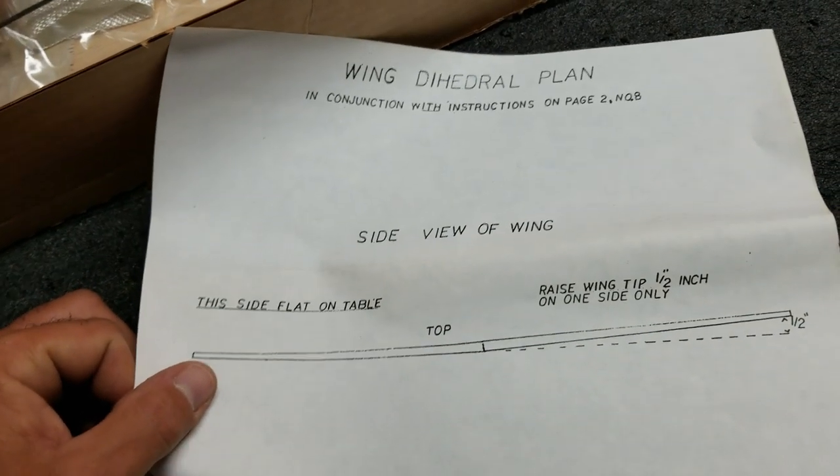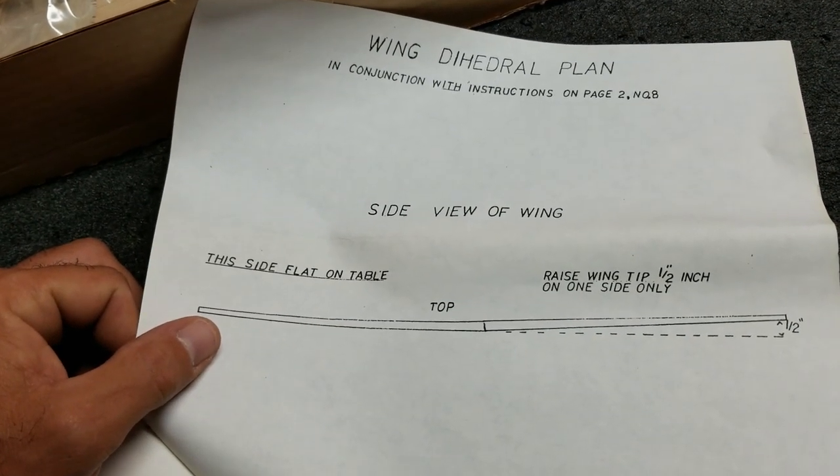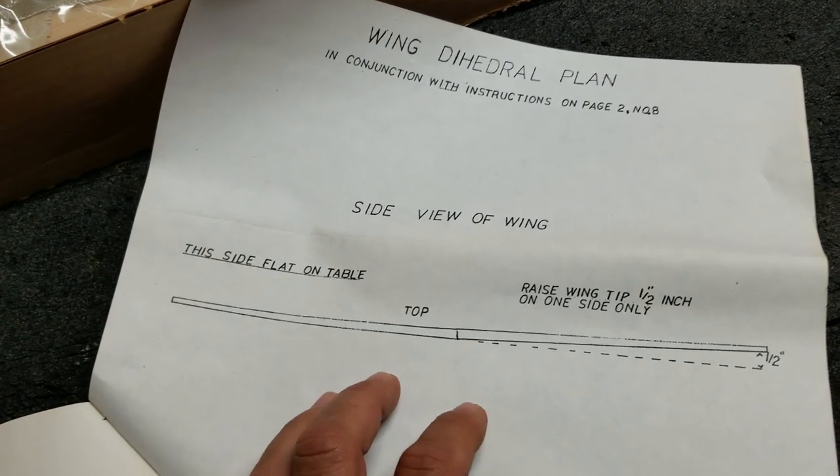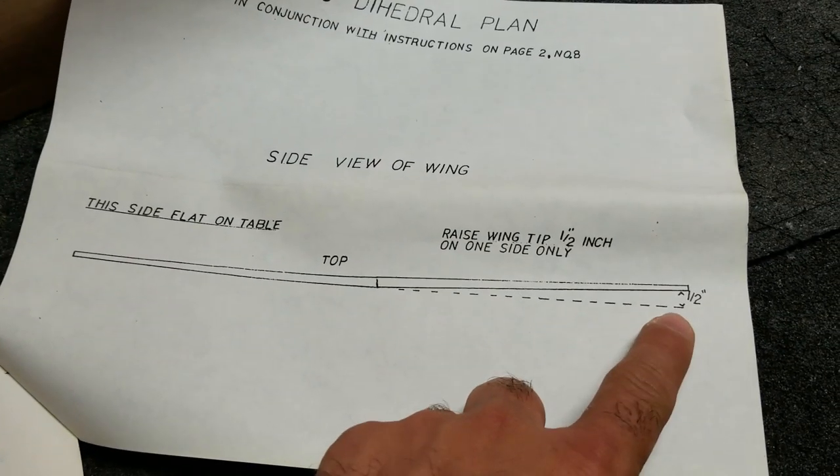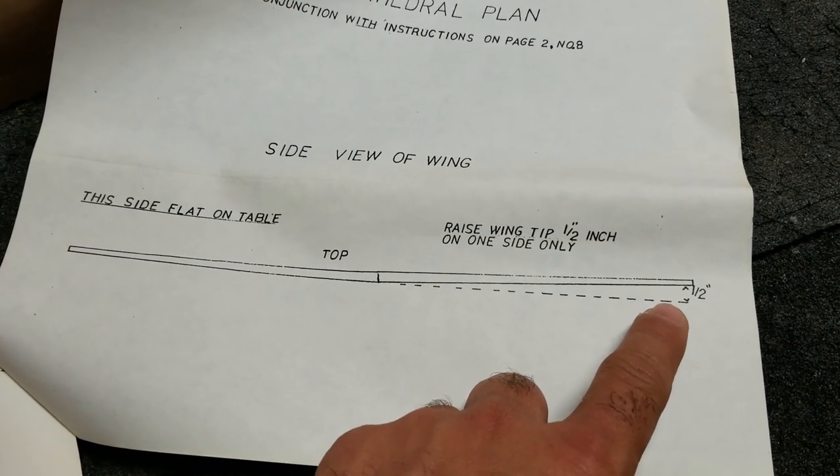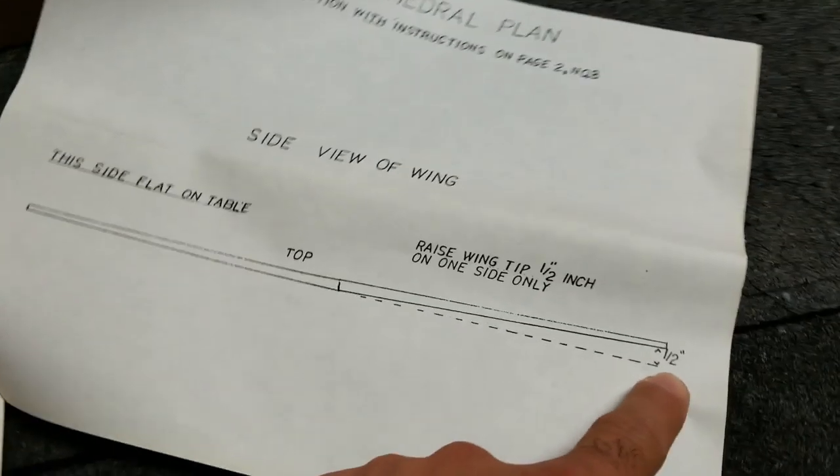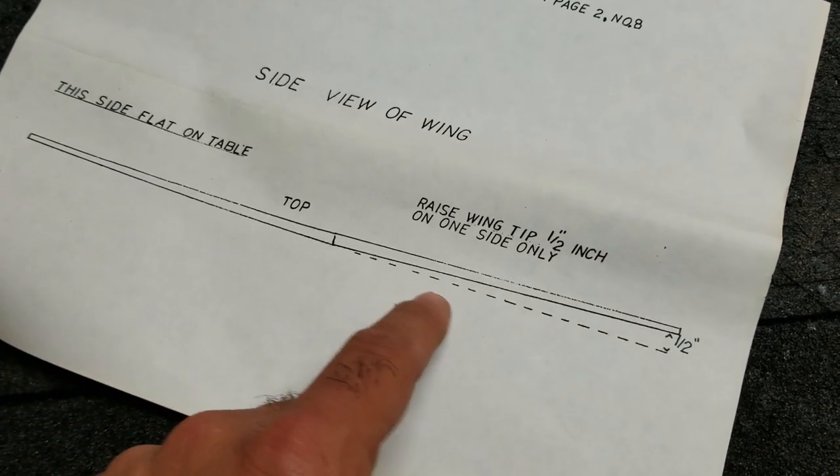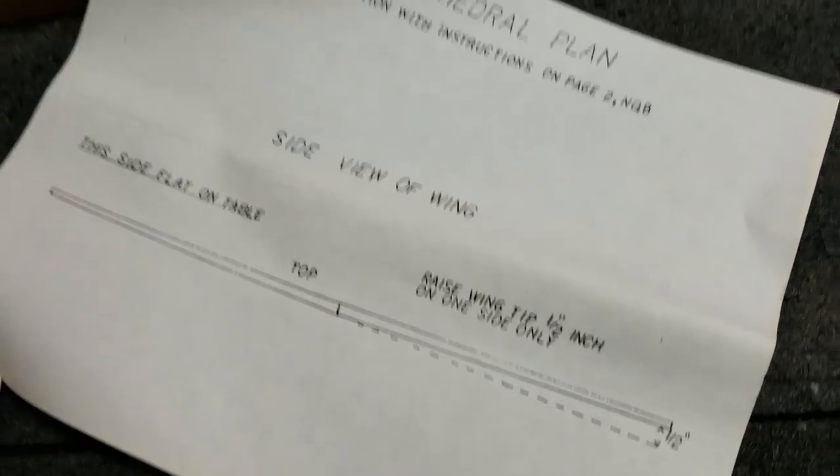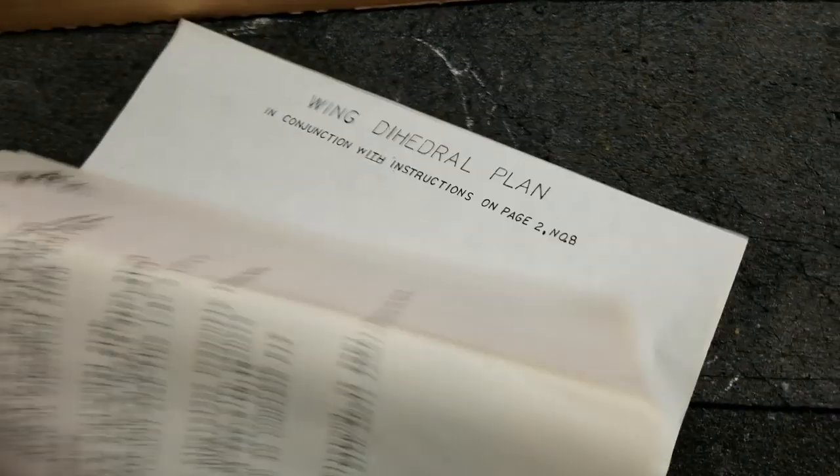And there's a dihedral plan in conjunction with instructions on page two. So this thing has a little bit of dihedral. It shows a half inch on one tip. I don't know what that is, but it can't be more than one or two degrees.